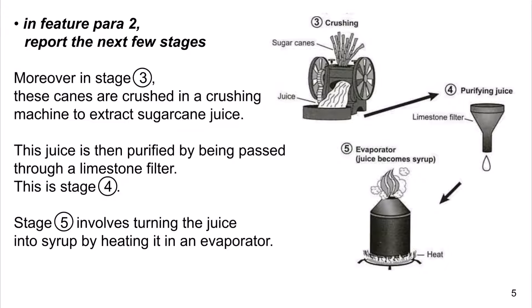In Feature Para 2, report the next few stages. Moreover, in Stage 3, these canes are crushed in a crushing machine to extract sugarcane juice. This juice is then purified by being passed through a limestone filter. This is Stage 4. Stage 5 involves turning the juice into syrup by heating it in an evaporator.